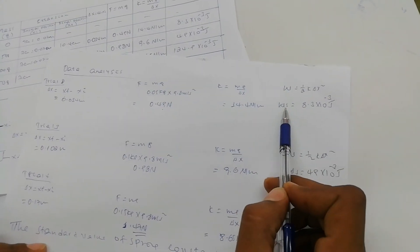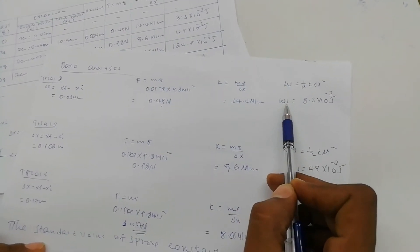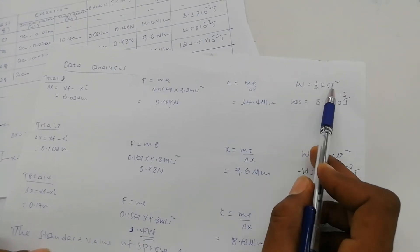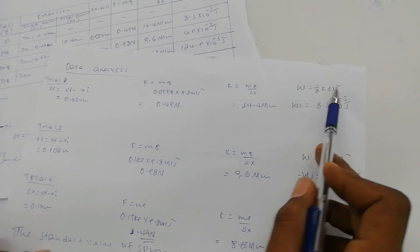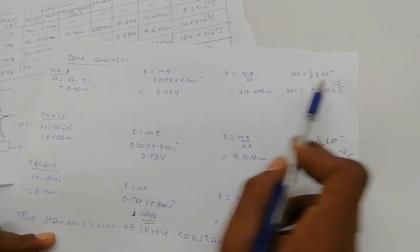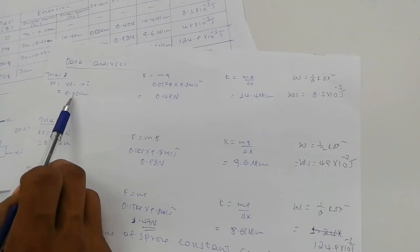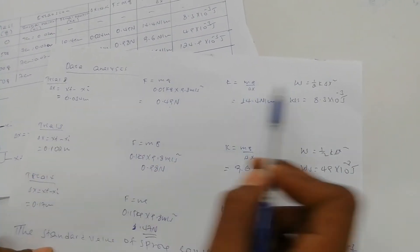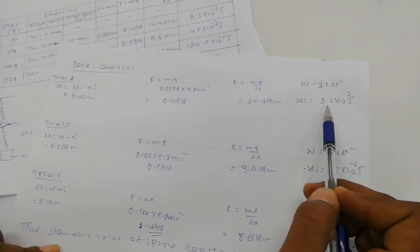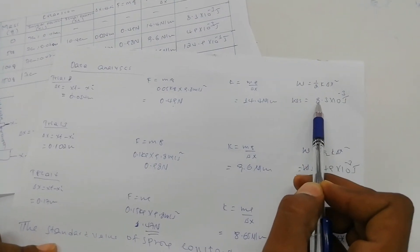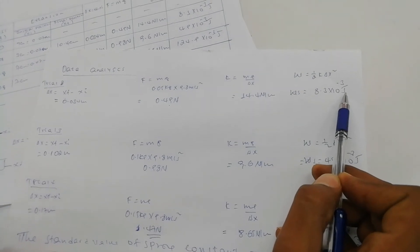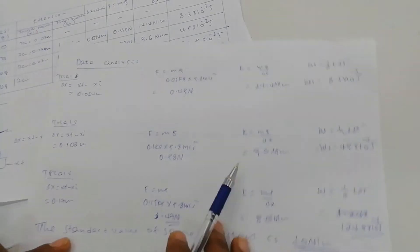The work done on the spring is calculated by one-half k times delta-x squared. Here the spring constant is 40.4 and delta-x is 0.034. When we calculate the equation, it is around 8.3 times 10 to the power minus 3 joules for the second trial.